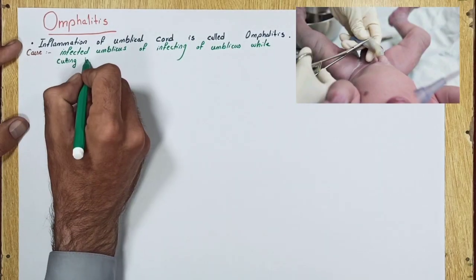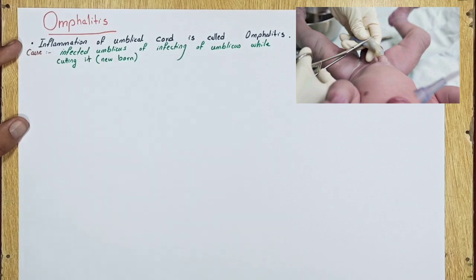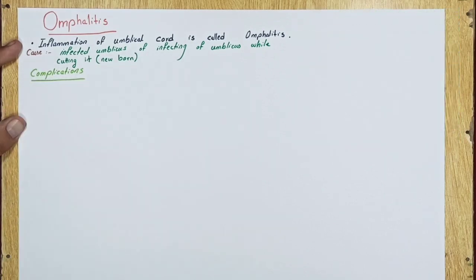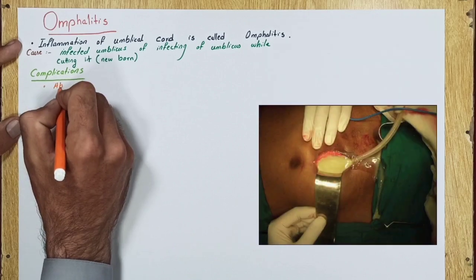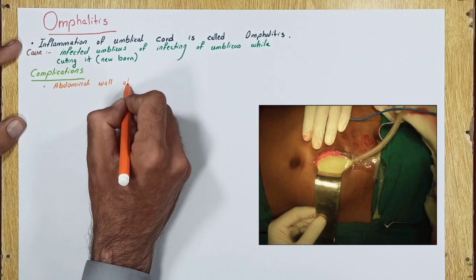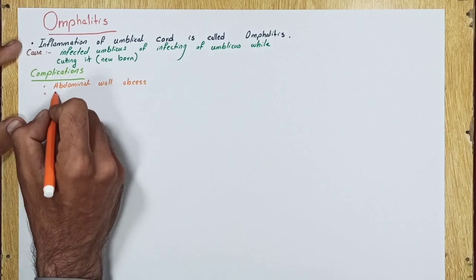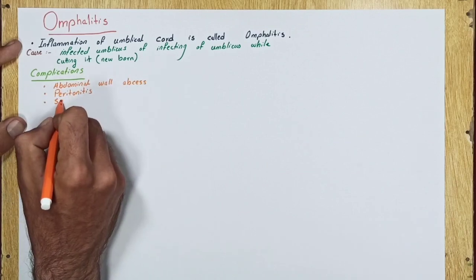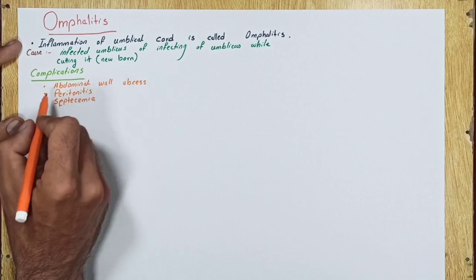Complications of omphalitis include abdominal wall abscess. If it ruptures, it causes peritonitis, then progresses to septicemia.